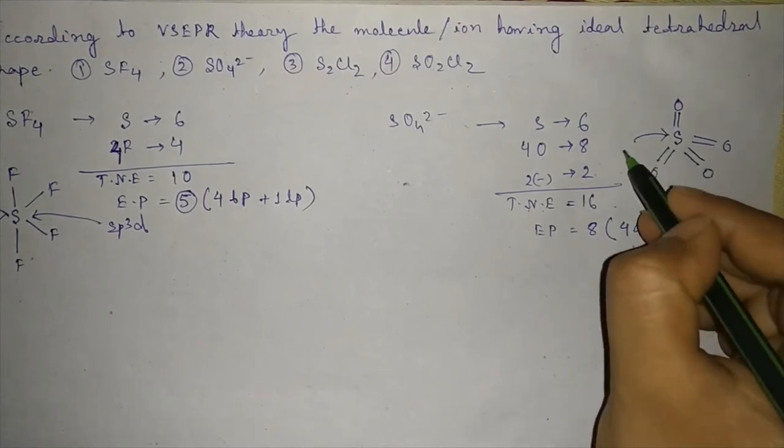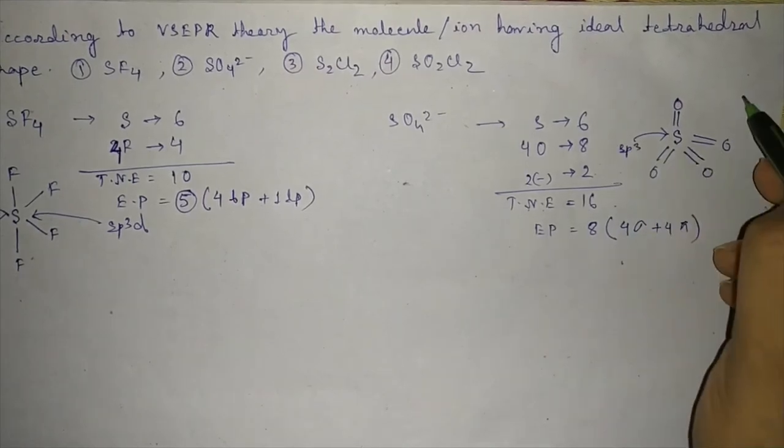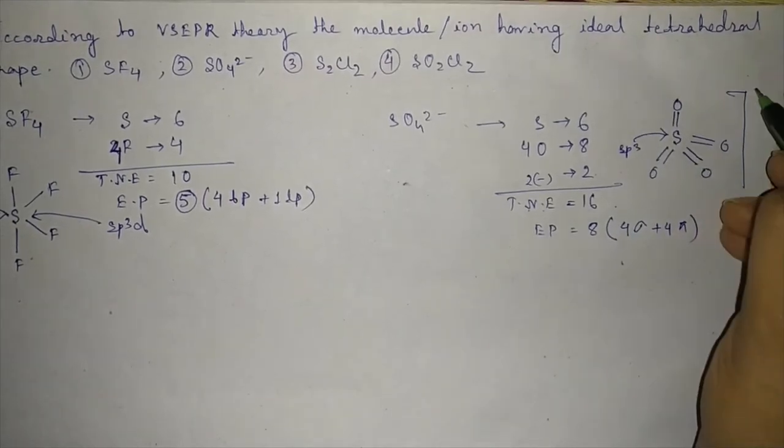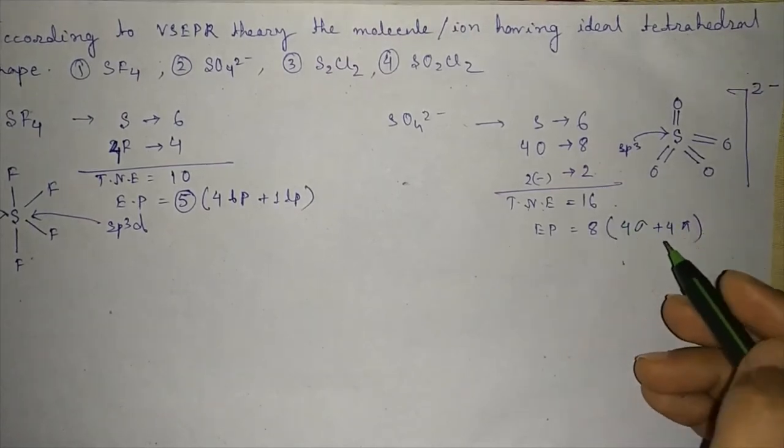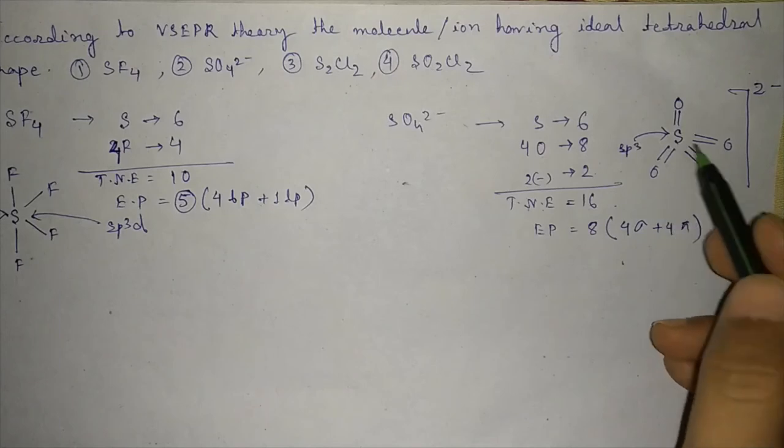So the structure will be - it is sp3 hybridization, overall charge will be 2 minus. It is ideal tetrahedral geometry.